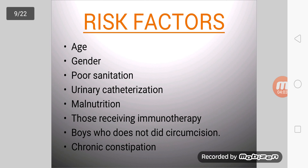The risk factors of UTI include age, gender, poor sanitation, urinary catheterization, malnutrition, those receiving immunotherapy, boys who are not circumcised, and chronic constipation.